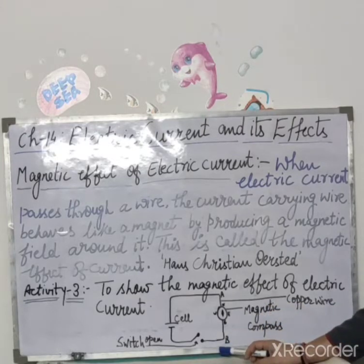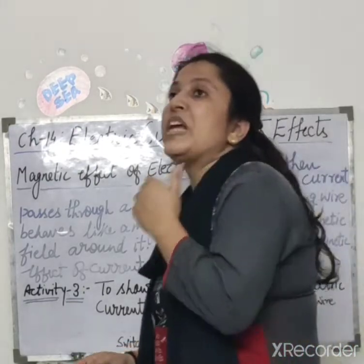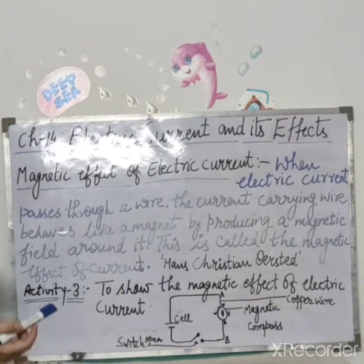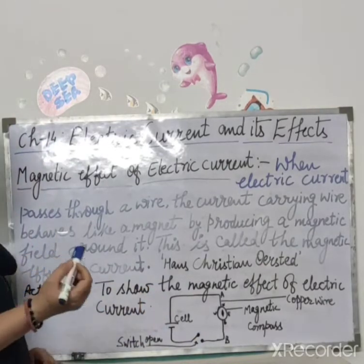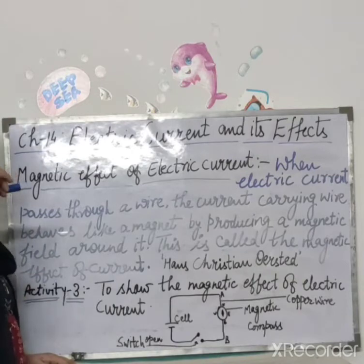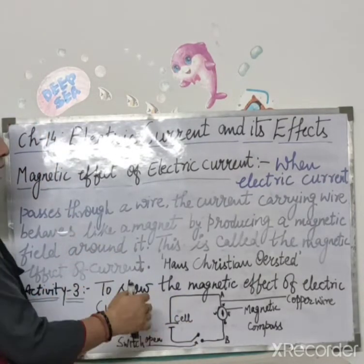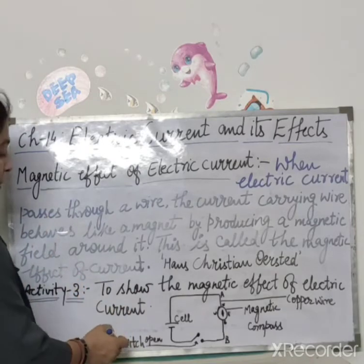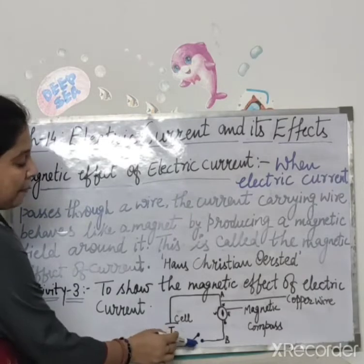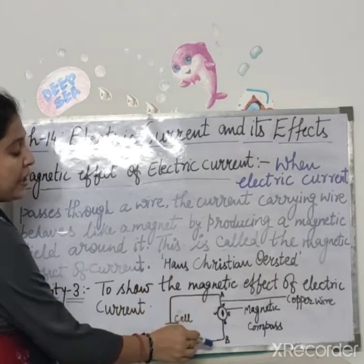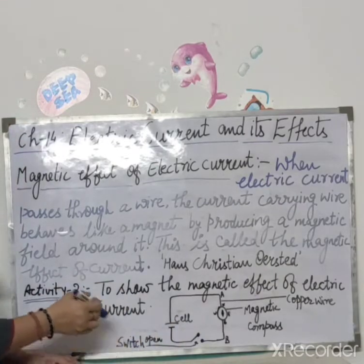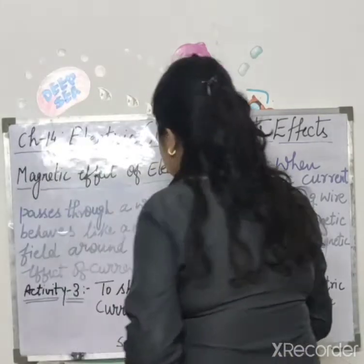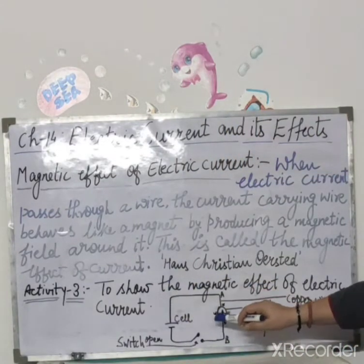Now open the switch so that the current stops flowing in the wire AB. Is tarike se jo material ham log ne liya, usse lekar hum log ek circuit bana lenge, aur sabse pehle switch ko off karenge aur off karne se pehle dekhenge ki isme kya ho raha hai, aur on karke bhi dekhenge. Jab switch open hai yani circuit open hai, to isme koi bhi current flow nahi. Doosri baar jab ham log dekhenge, to switch ko close kar denge, taaki hamara circuit close ho jaye aur isme current flow hone lage.